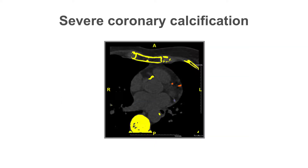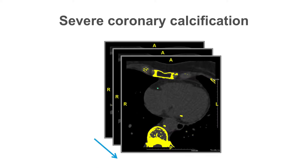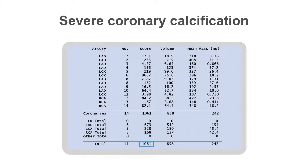Let us work through a case together. Using the same principle, this is an example with more extensive coronary artery calcification. The total coronary artery calcium in this case was 1,061 Agatston units.